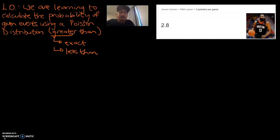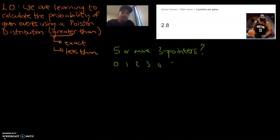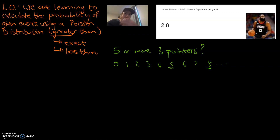So what we want to know is when is he going to get five or more three-pointers? And we always start our questions with our number line: 0, 1, 2, 3, 4, 5, 6, 7. I'm going to stop at eight, because eight is a couple more than five, which is what we're interested in. We need to shade in the area that we're interested in. This area, five or more — does it include five? Yes, definitely does. So five or anything extra — we're going to circle all of that area there. These are the ones we are interested in.